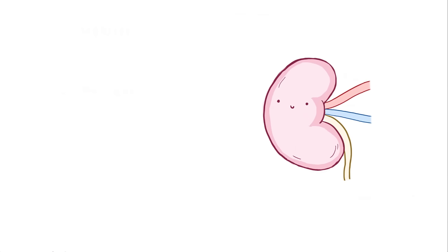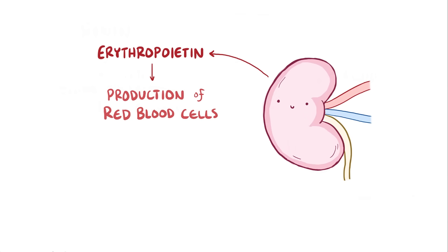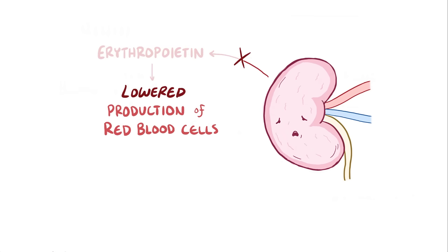Finally, the kidney also secretes the hormone erythropoietin, which stimulates the production of red blood cells from the bone marrow. In chronic kidney disease, erythropoietin levels fall, and this leads to the lowered production of red blood cells, and ultimately anemia.